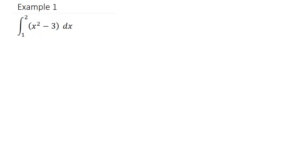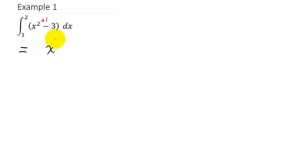Let's take a look at some examples. The first thing we need to do is take the anti-derivative of x squared minus 3. We're going to use the power rule. To integrate, we add 1 to the exponent, giving us x cubed, then multiply by the reciprocal of the new exponent — times 1/3. The anti-derivative of the constant 3 is just 3x.